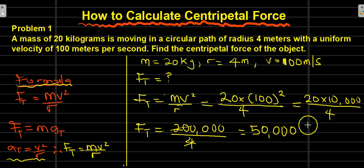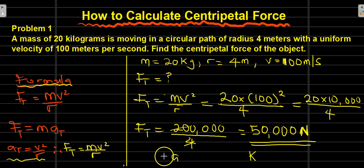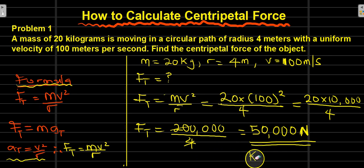The unit of force is in newtons. You can also write it as newtons. Therefore, we have 50,000 newtons, which is our final answer. You can also use force equals mass times acceleration — F equals ma — and use other units of force, but preferably use newtons as our unit for the final answer.